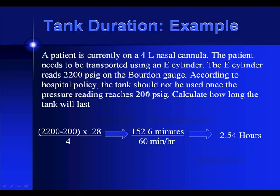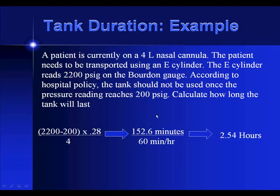Let's look at an example. A patient on a 4-liter nasal cannula needs to be transported using an E-cylinder with 2,200 PSIG. Per hospital policy, the tank should not be used once pressure reaches 200. So we subtract 200 from 2,200, giving us 2,000. Then: 2,000 times 0.28 divided by 4 equals roughly 152 minutes. Divide by 60, and the tank will last about 2.54 hours. In general, an E-cylinder running at 4 liters per minute lasts around 2.5 hours.